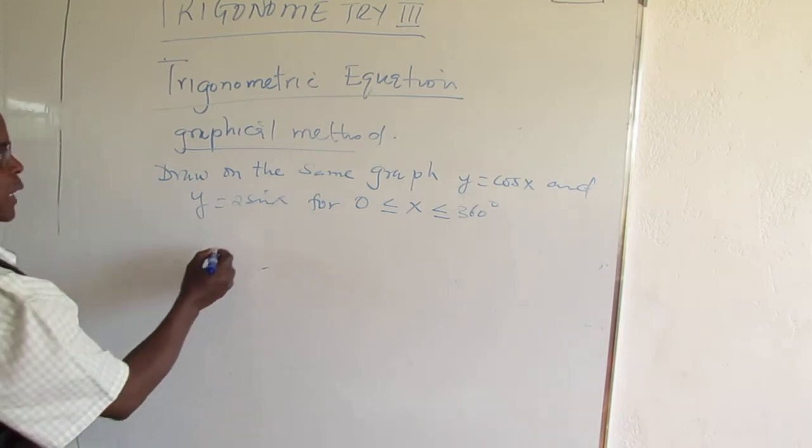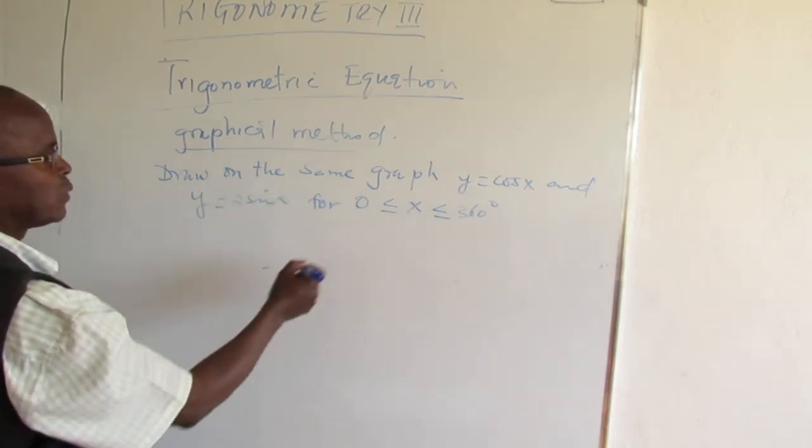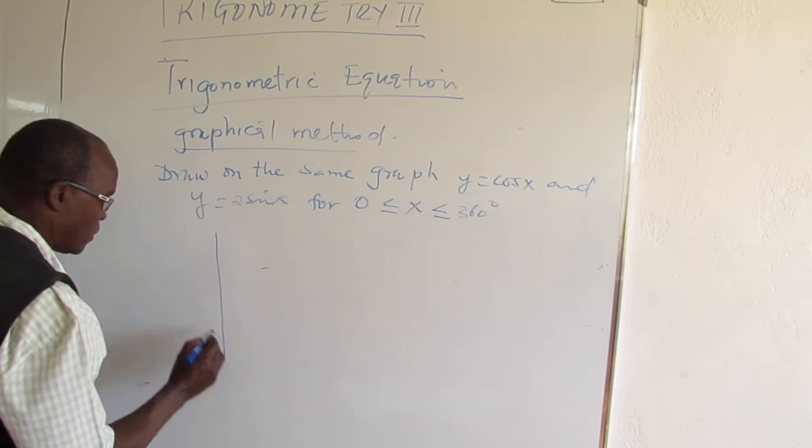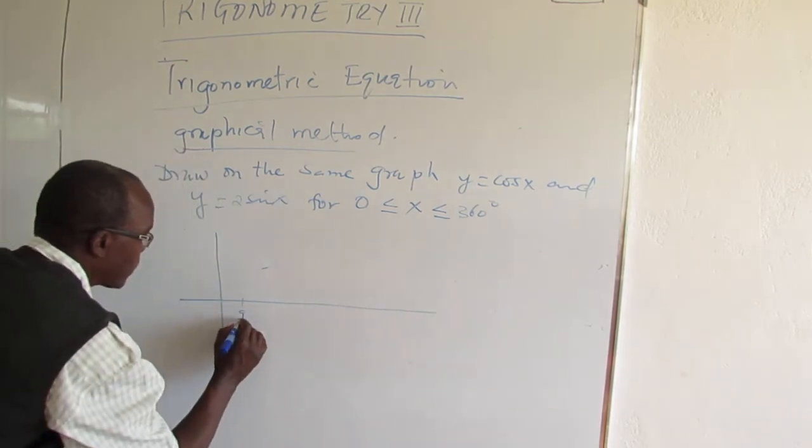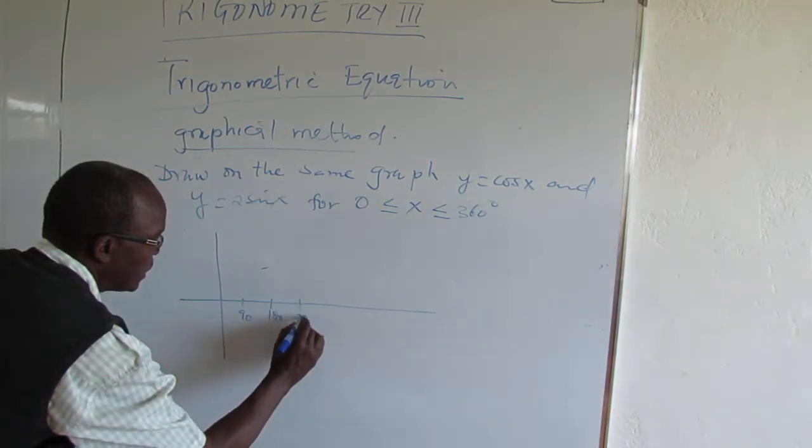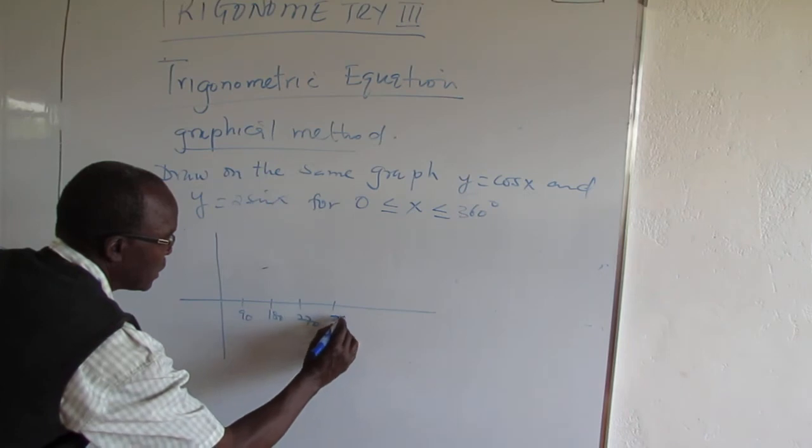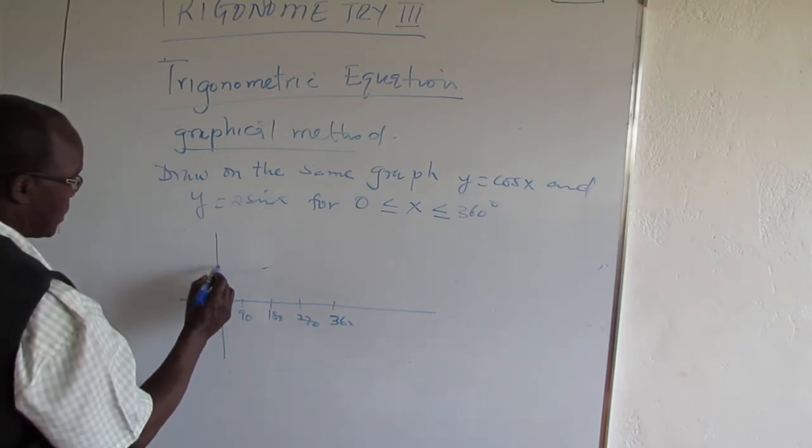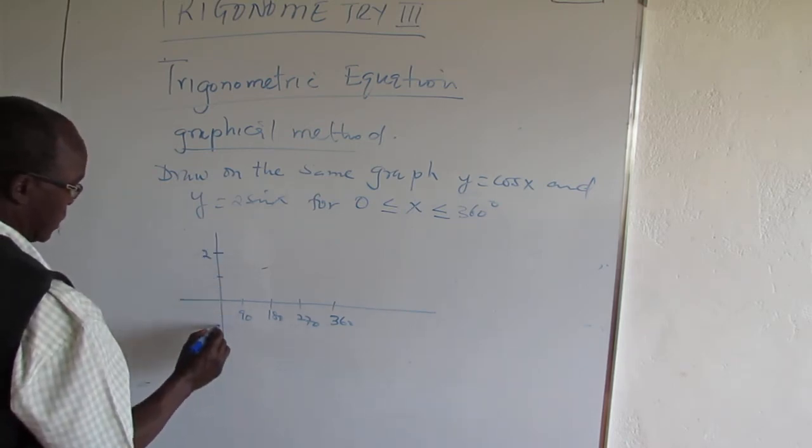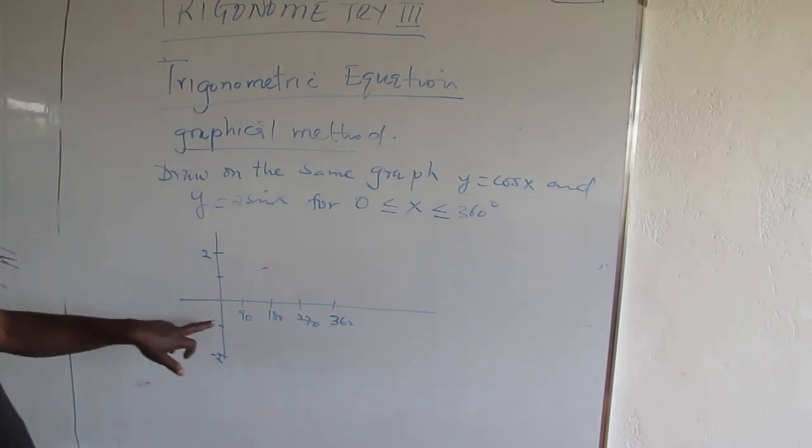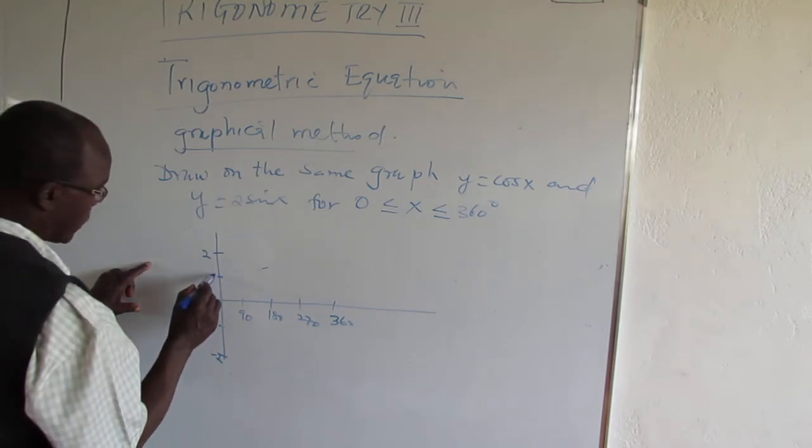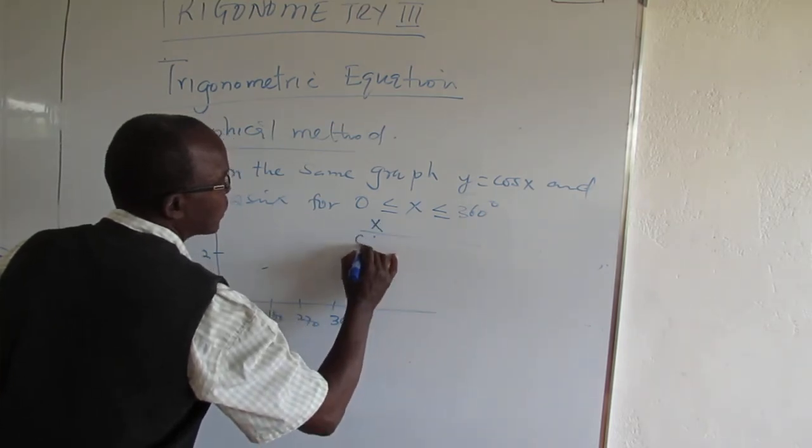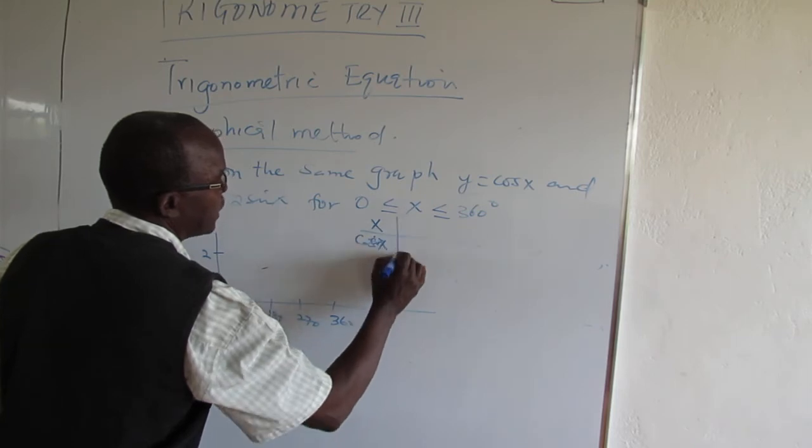So you make a table again. Draw the two graphs, cos x and sin x. Set up your x-axis with 0, 90, 180, 270, 360.